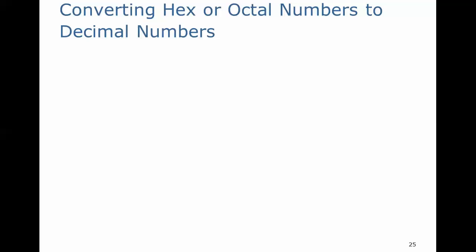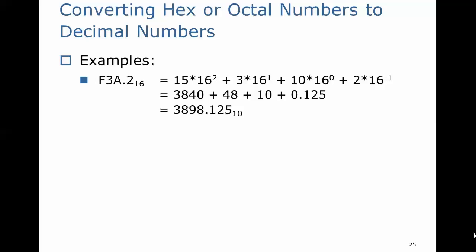Converting hexadecimal or octal numbers to decimal numbers. Just as we have in base 10, the place values of 1, 10, 100, 1000, there's an order of magnitude factor of 10 for each adjacent digit. In the base 16 system, we have powers of 16. So we'll have 15, which is F, times 16 squared, plus 3 times 16 to the first, plus A is 10 in decimal, times 16 to the 0, which is 1, and then 2 times 16 to the minus 1, and we add those up to arrive at our decimal equivalent.